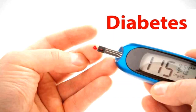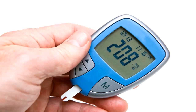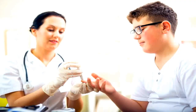Diabetes mellitus, commonly known as diabetes, is a metabolic disease that causes high blood sugar. In this disease, the blood sugar level becomes very high in the patient.